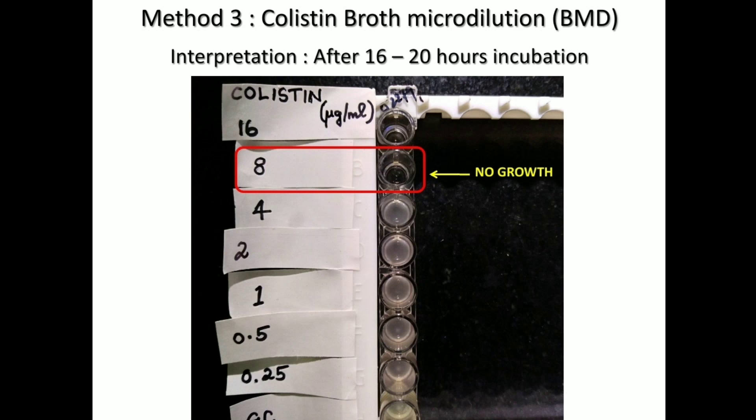After 16 to 20 hours of incubation, the well that has completely inhibited growth should be taken as the MIC value. Here we see that the 8 microgram per ml colistin well has completely inhibited the microorganism, so the MIC is 8 microgram per ml. According to the interpretive guideline, this isolate is resistant to colistin.